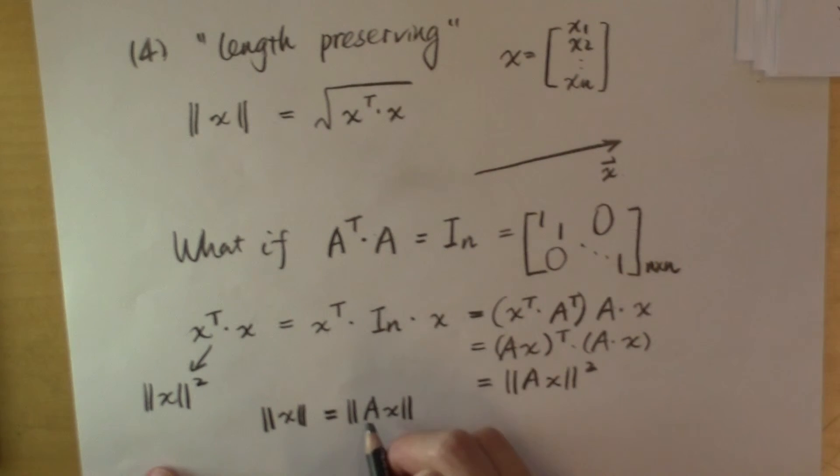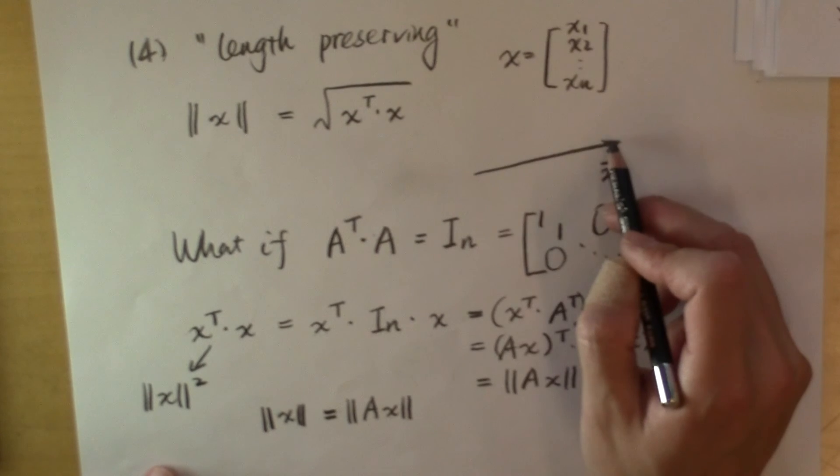Which means the matrix A, when it's multiplied to this vector x, which gives you another vector, it preserves the length of the original vector. So, the new vector is going to have the same length as vector x.